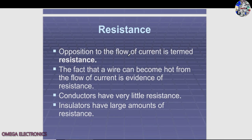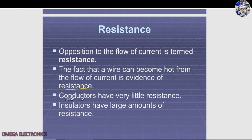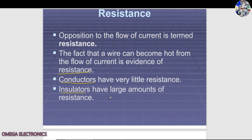A wire sometimes becomes hot due to the property of resistance. Conductors have very little resistance because electrons flow freely through them. Insulators have large amounts of resistance because their electrons are not freely movable, so they resist current flow more. The practical unit of resistance is the ohm, designated by the Greek letter omega (Ω).